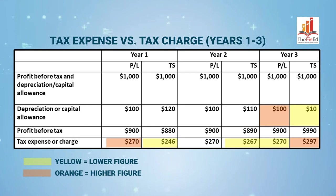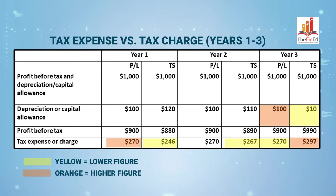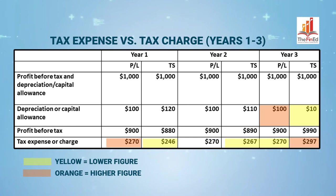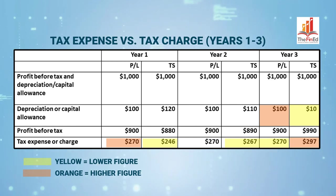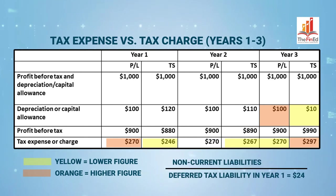Hence it is a temporary difference which is to be taxable in the future — this is exactly where the term taxable temporary difference fits in. In other words, this is a tax liability which is to be deferred or pushed forward into the future. At the end of year one, Alpha will report a deferred tax liability equal to $24 in the non-current liability section of the statement of financial position.